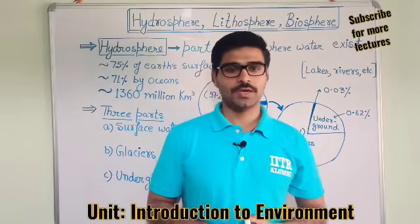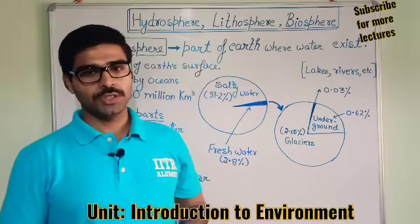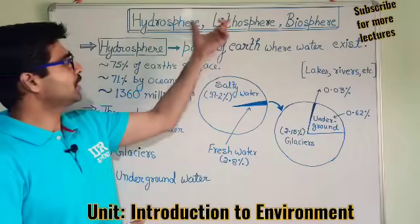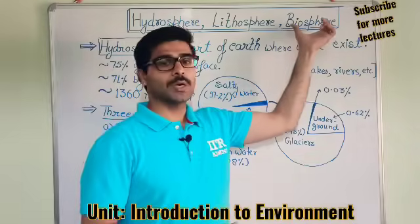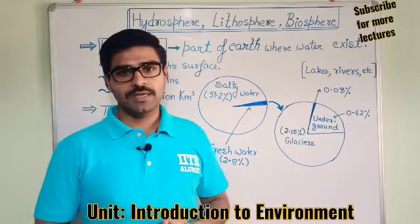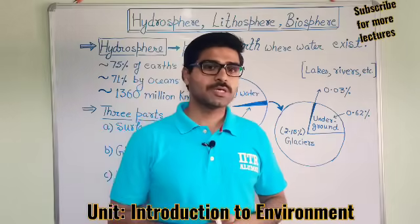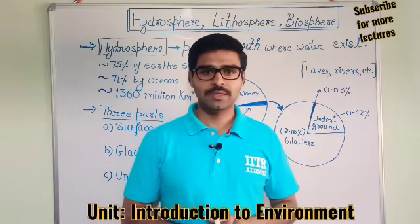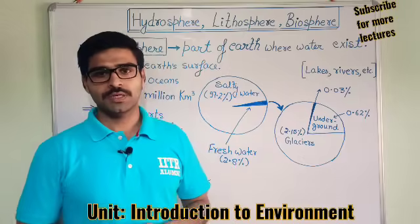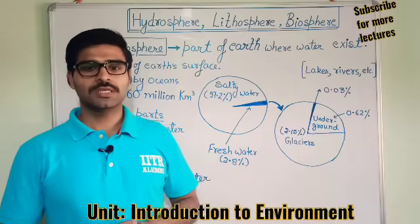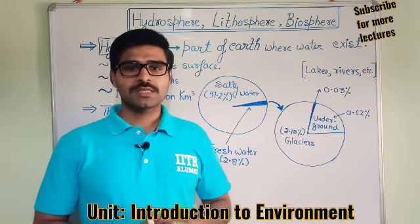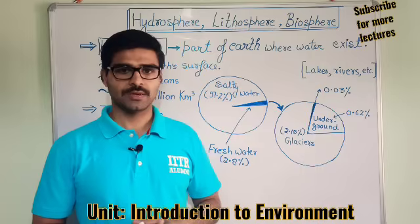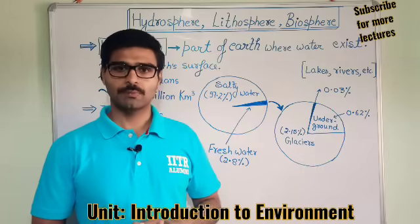Hello everyone. Today I will explain you about the segments of the environment: Lithosphere, Hydrosphere, and Biosphere. In the last lecture I had explained you about the segments of the environment. There are four segments of environment: first is Atmosphere, second Hydrosphere, third Lithosphere, and fourth Biosphere. Today we will discuss all three segments — Hydrosphere, Lithosphere, and Biosphere — in detail.